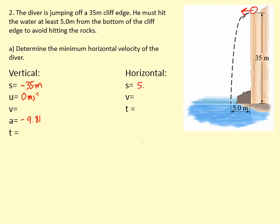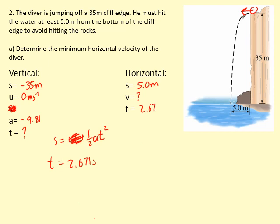The required horizontal displacement is at least 5 meters. We don't know the horizontal speed yet, so we first find time using the vertical motion. Again using s = ut + ½at² with u = 0, solving gives t = 2.671 seconds in the air. Using v = s/t horizontally: v = 5 / 2.671 = 1.872 meters per second. That is the minimum horizontal velocity required.